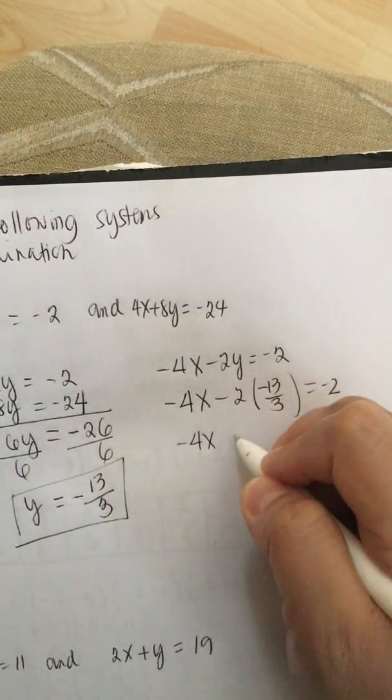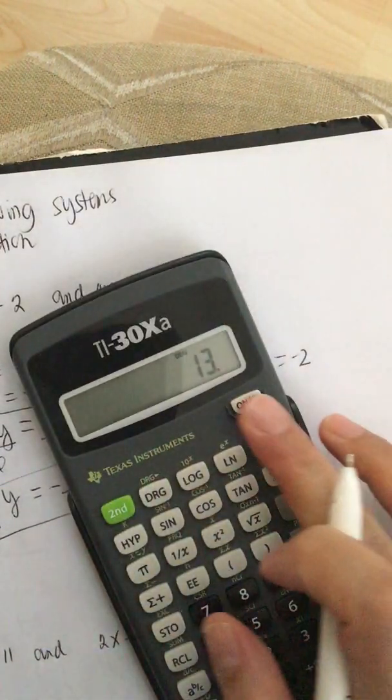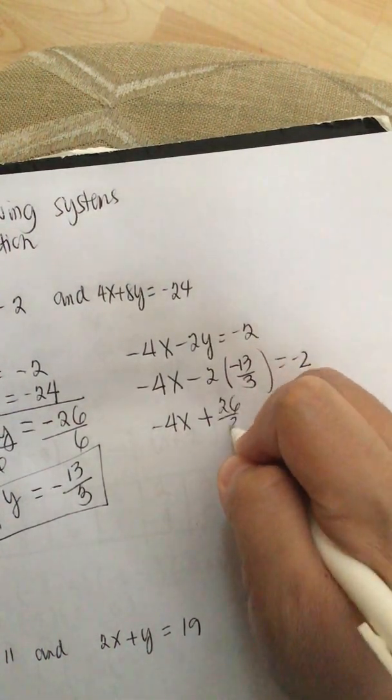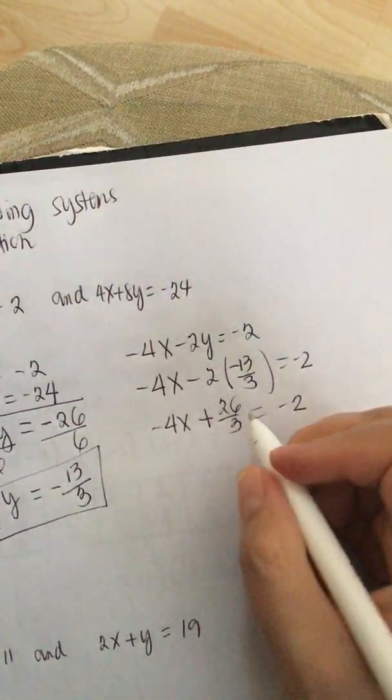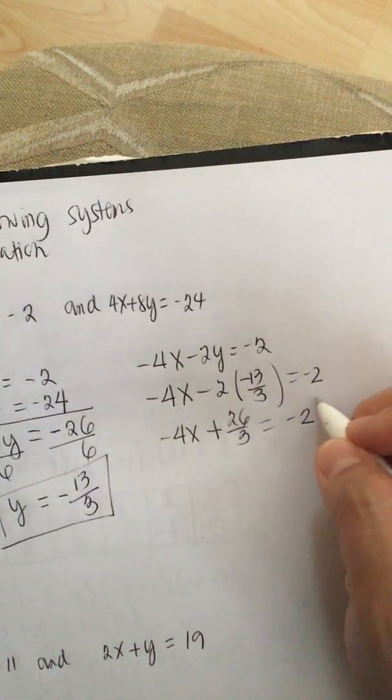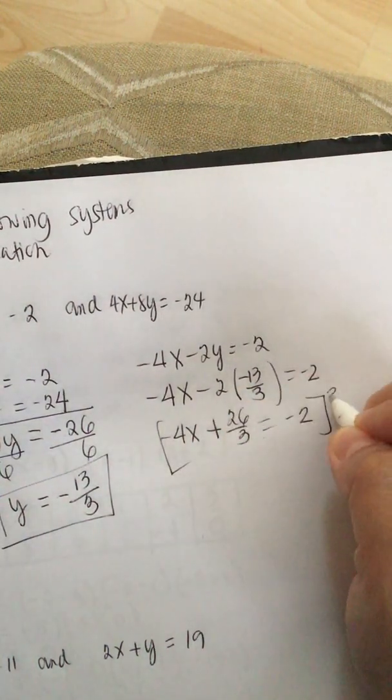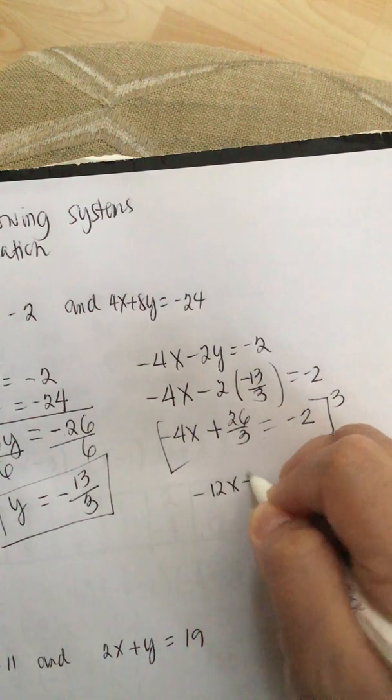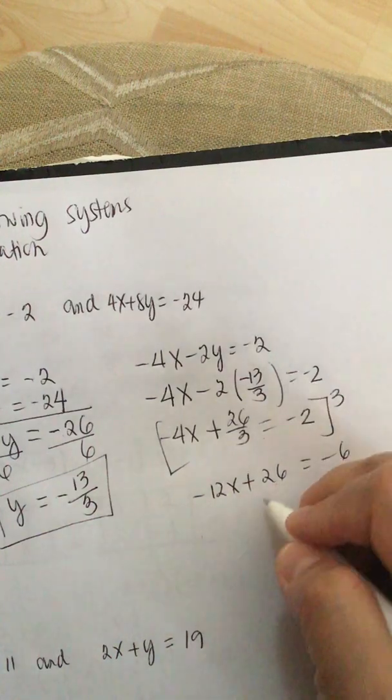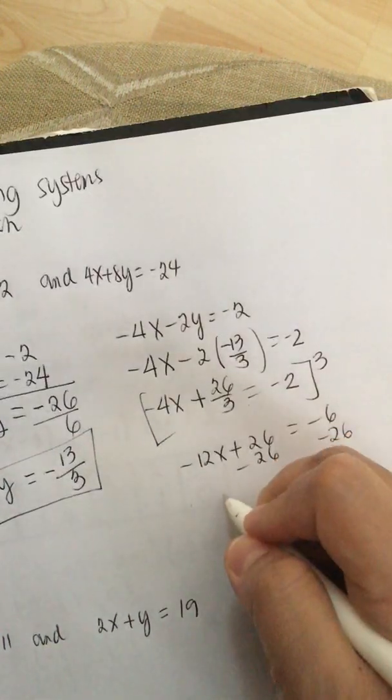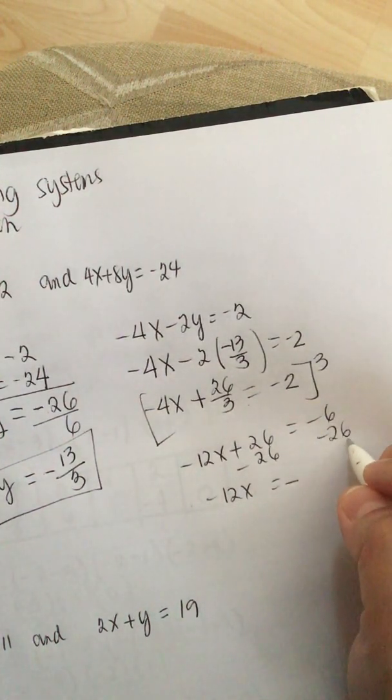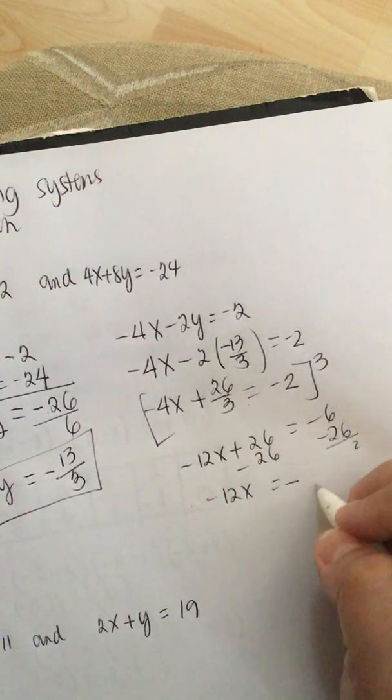So this is -4x + 13 times 2 is 26 over 3 is equal to -2. So let's multiply everything by 3 to get rid of the fraction. So we have -12x + 26 is equal to -6. So we solve for x minus 26 minus 26.